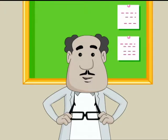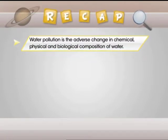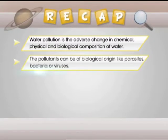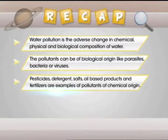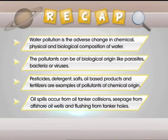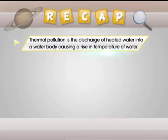It is now time to dive into the pool of information and have a quick recap of what we have learned today. Water pollution is the adverse change in chemical, physical and biological composition of water. The pollutants can be of biological origin like parasites, bacteria, or viruses. Pesticides, detergent, salts, oil-based products and fertilizers are examples of pollutants of chemical origin. Oil spills occur from oil tanker collisions, seepage from offshore oil wells and flushing from tanker holes. Thermal pollution is the discharge of heated water into a water body, causing a rise in temperature of water.